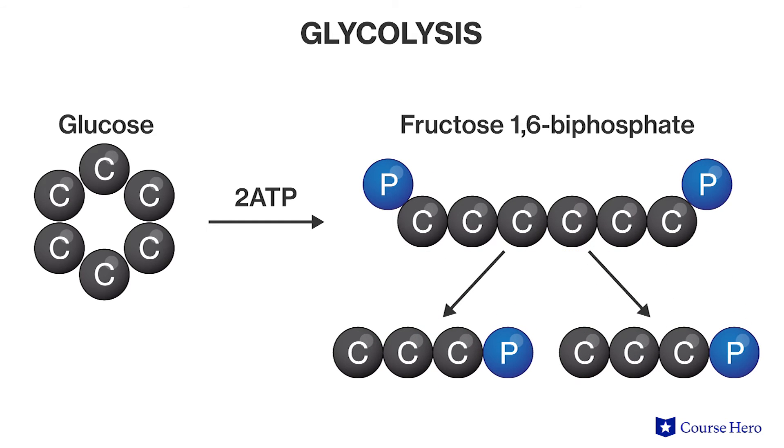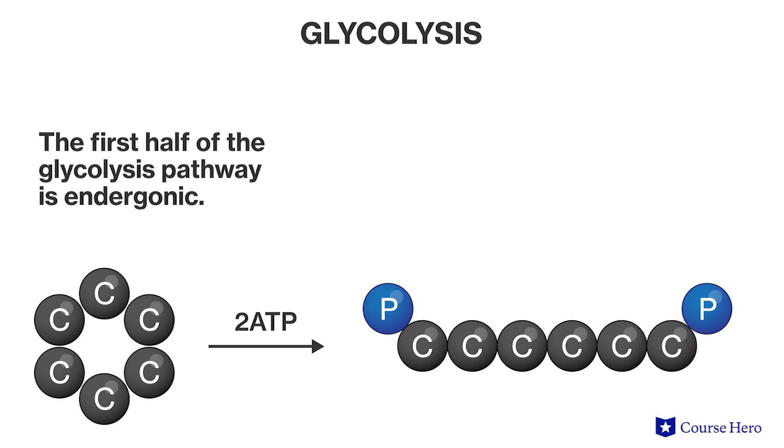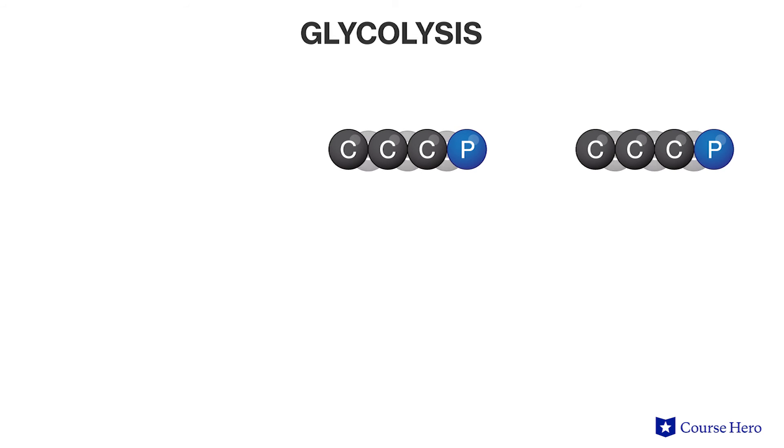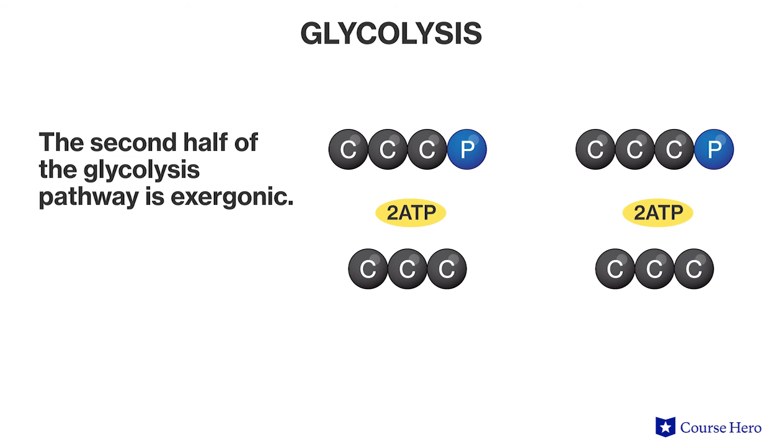Unlike the Calvin cycle, glycolysis is a straight pathway — the products do not return to form the reactants. Glycolysis consists of many steps, each step catalyzed by a different enzyme. The first half of the glycolysis pathway is endergonic because it takes in two ATP molecules. However, the second half of the pathway produces four ATP molecules. The net change in ATP is two ATP produced, making the entire glycolysis pathway energy-producing and thus exergonic.